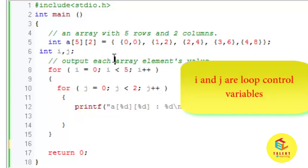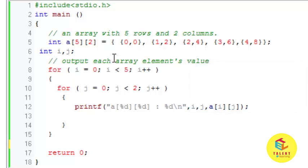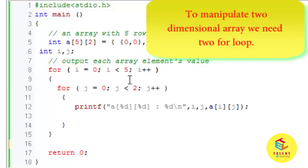Now to access the element of two dimensional array we need two for loops. And this is the nested for loops. So I have created one for loop which starts from i is equal to zero to i less than five. Means this for loop will run for five times because the row contained by array is five.